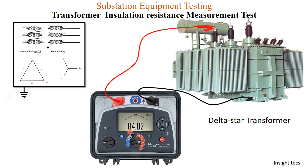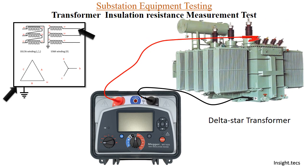For the ten-minute reading, the value is 4.02 giga ohms. We record this. For the next reading, which is LV winding to earth, we change the connection to the LV winding bushing, set it again to 5 kV, press the test button, and the one-minute reading is 2.27 giga ohms.